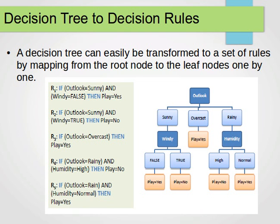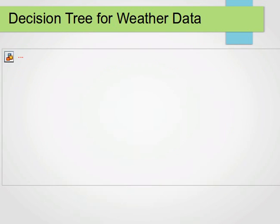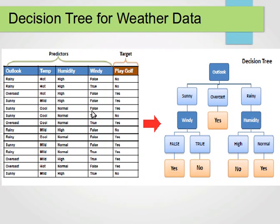If our data contains numerical variables, we can use binning to transform them into categorical variables and then develop our decision tree. If you don't know how to convert numerical to categorical or categorical to numerical variables, please watch my data exploration and analysis tutorial where I explain various techniques for doing this. Thank you very much for watching and I'll see you in the next video.